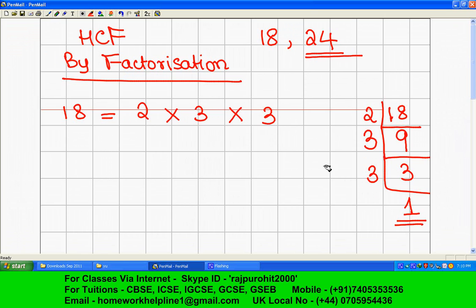The same way I will find the factors of 24. So I take 24 here. Start with 2. Two twelves are 24, so I write 12 here. Then again it is divisible by 2, so two sixes are 12.